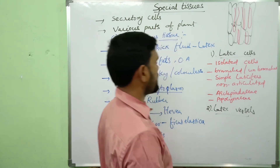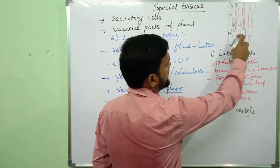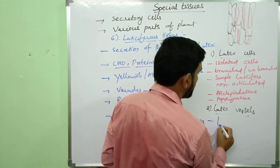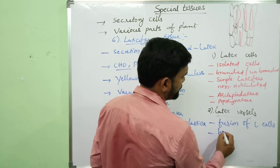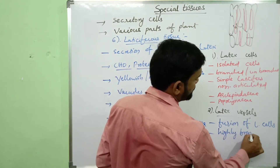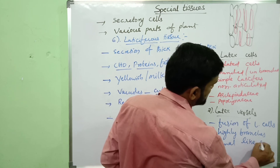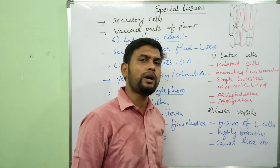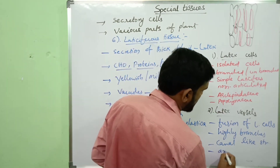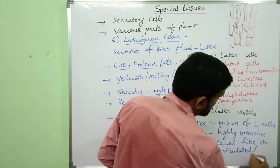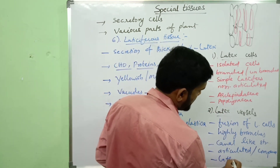Coming to the second type: latex vessels. Latex vessels are formed by the fusion of latex cells. They are highly branched and canal-like structures in which latex flows from one place to another. They are called articulated laticiferes, compound laticiferes, or latex ducts.